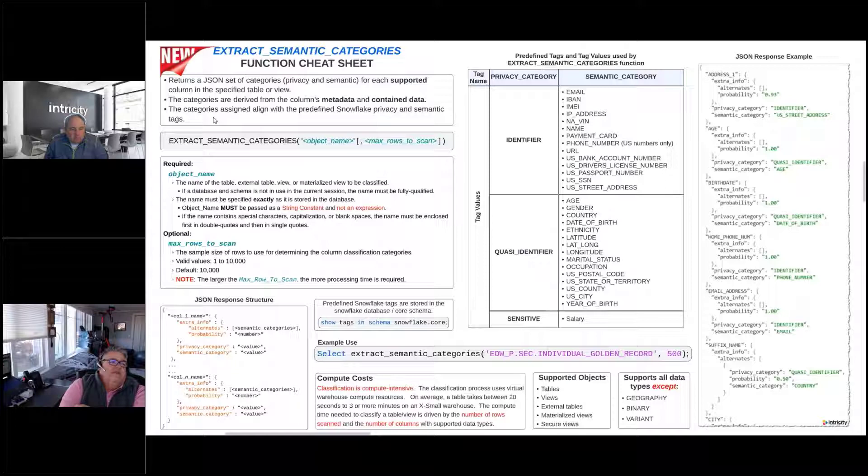One of the important things to understand is that the way the categories are being derived, it's actually using the metadata and the contained data. So it's looking at column names, but it's also going in and looking at the actual data inside of those columns to try and figure out: do we have some sensitive data in some of these columns?